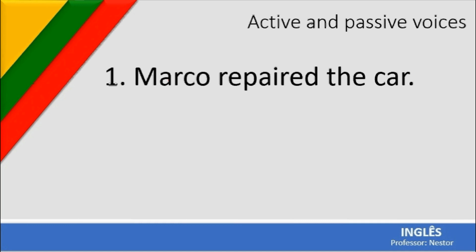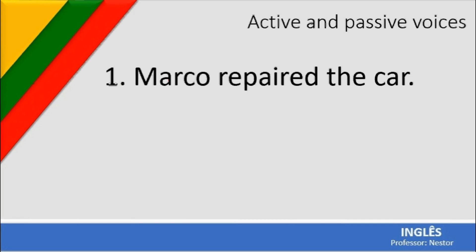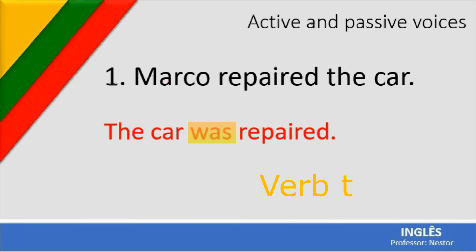To convert to passive voice, you can't simply move 'the car' to the beginning and write 'the car repaired Marco' — that's wrong. The car didn't repair anyone. You have to change the verb as well. The answer is: 'The car was repaired.' You invert the subject, and use the auxiliary verb 'to be' in the past — 'was' — because the subject is now 'the car,' which is singular.